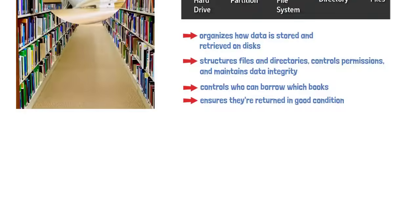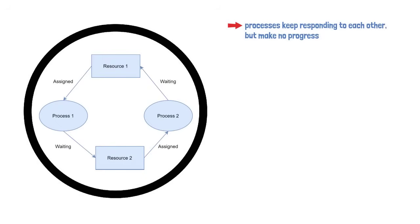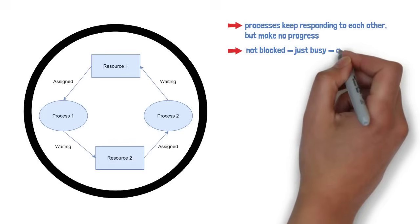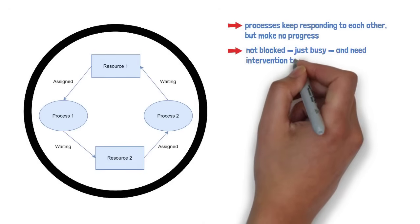Livelock happens when processes keep responding to each other but make no progress. They're not blocked, just busy, and need intervention to resolve.